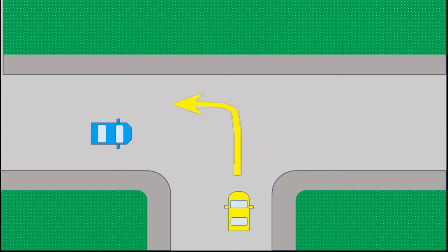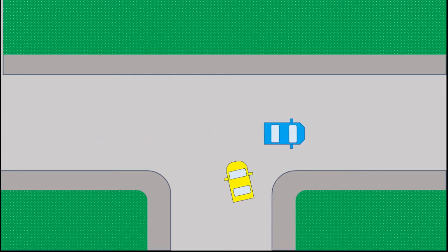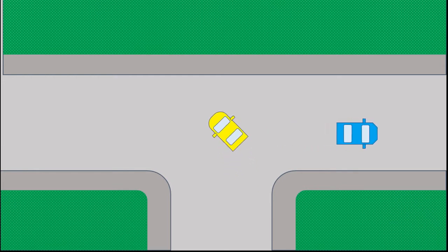Who has the right of way now? The yellow car turning left or the blue car going straight through the intersection? The majority of drivers would assume that the blue car has the right of way because it's going straight while the yellow car is turning.